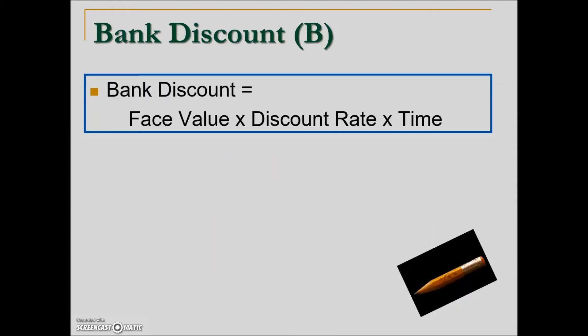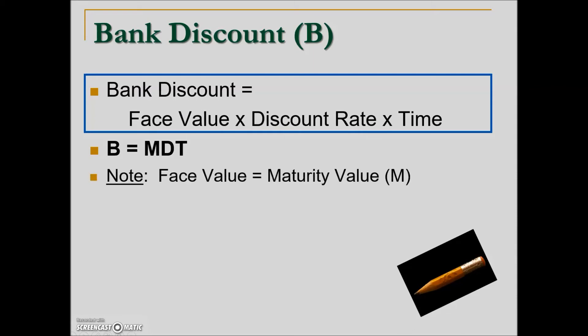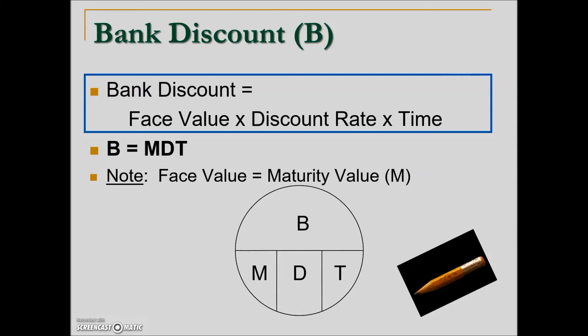To calculate the bank discount — remember, this is interest — we take the face value times the discount rate times the time. This has a very similar feel to calculating simple interest, where we take principal times rate times time. The face value is the maturity value. We can use this circle formula to help with various arrangements for calculating bank discount given three of the four variables.